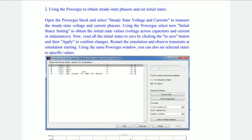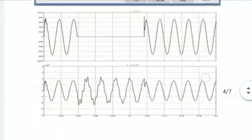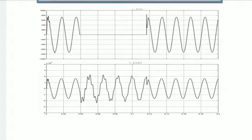Further, using the power guide to obtain steady state phasors, set initial states. For initial states, we have set all the initials to 0. It will show the transients initially because we have set all the initials to 0. This is the waveform.